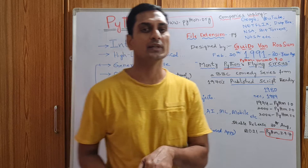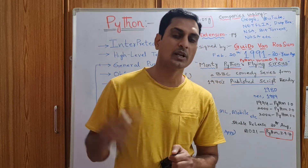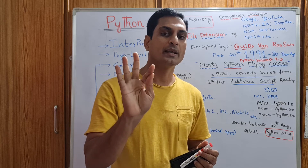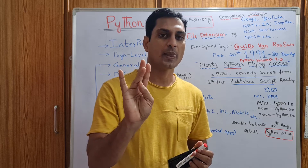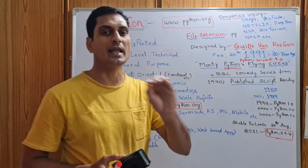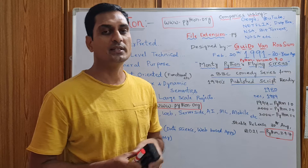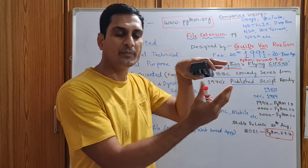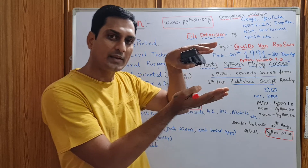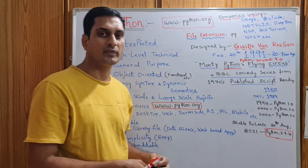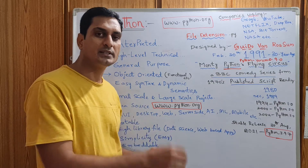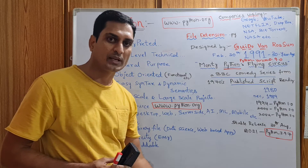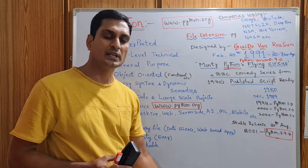If we look at interpreted programming language: just like Java, Python is also an interpreted language. Generally, translators are of three types: compilers, interpreters, and assemblers. C and C++ are compiled programming languages, meaning the compiler translates the entire high-level code into low-level machine language — zeros and ones — that the computer can understand.